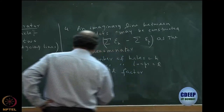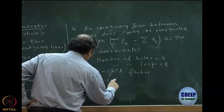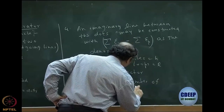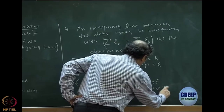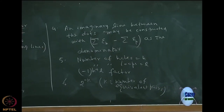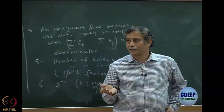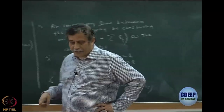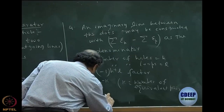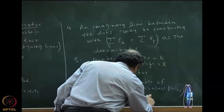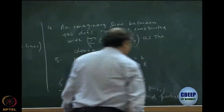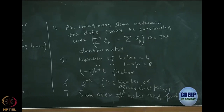Multiply by that sign factor. Rule 6: multiply by 2 to the power minus K, where K is the number of equivalent pairs. An equivalent pair is either a pair of holes or a pair of particles starting from the same vertex and ending at the same vertex. Finally, it is important to write that we sum over all holes and particles — when you write the algebra, all internal holes and particles must be summed.